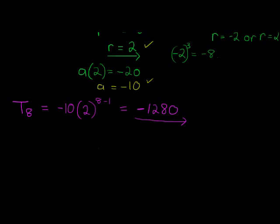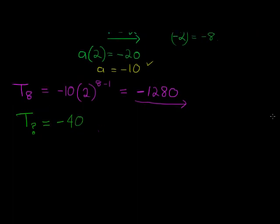Now they ask me which term is equal to negative 40. So term, who knows, is equal to negative 40. Maybe you can suspect it's 3. But let's just confirm. So we know that negative 10 times 2^(n-1) must equal negative 40.